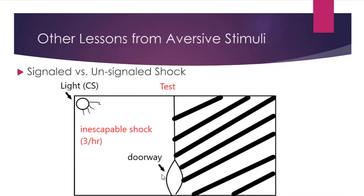During testing, you open the doorway and measure which side of the box the animal spends most of its time in — the signaled or the unsignaled side. Remember, they get shocks at the same rate no matter which side they're on. Which side would you choose? You'd probably pick the signaled side. The reason is that you not only know when the shock is coming, more importantly, you know when it's not coming. So you can relax. On the unsignaled side, you have no idea when the shock is coming and you're probably always anxious. The bottom line: when bad things happen to us, we'd rather know when they're coming than not.